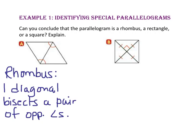In Parallelogram B, we can see that the diagonals are congruent and are perpendicular to each other. Congruent diagonals are properties of a rectangle and perpendicular diagonals are properties of a rhombus. Since this parallelogram is both a rhombus and a rectangle, it is a square.